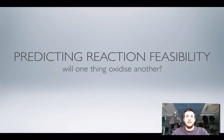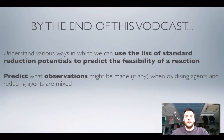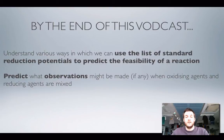Hello and welcome to this second film about the practical aspects of redox chemistry. This one deals with reaction feasibility. Hopefully by the end of this film you'll be able to use your table of standard reduction potentials to predict whether or not a reaction will happen — that is to say whether it's feasible or not. And once you've decided whether it's feasible, you'll be able to predict any observations that you'll make. Obviously if it's not feasible, no reaction will happen and there won't be any observations.